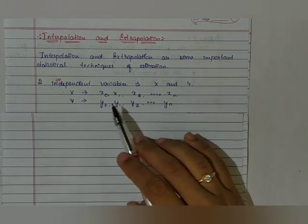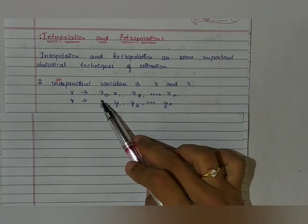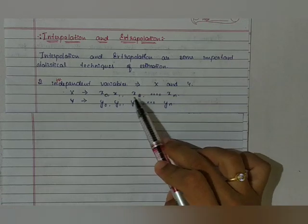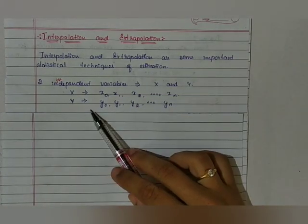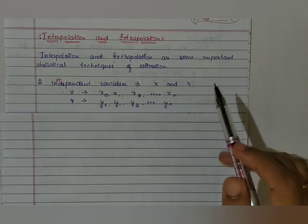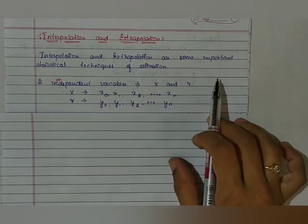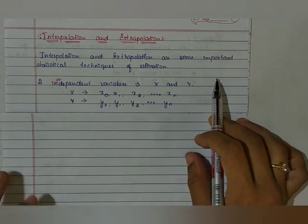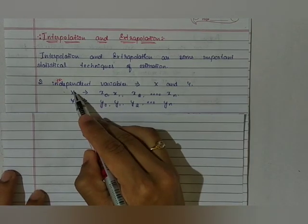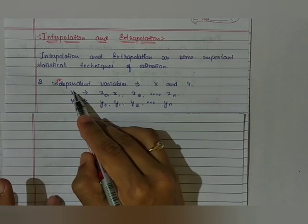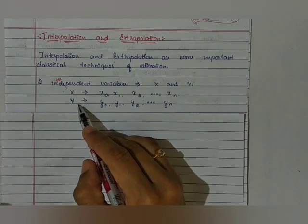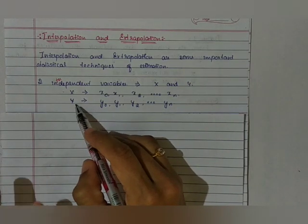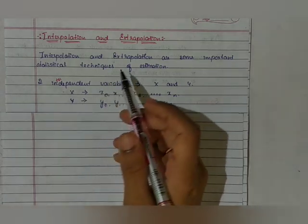The variables under x are x0, x1, x2 up to xn, and similarly for y it is y0, y1, y2 up to yn. Here x is the independent variable whereas y will be the dependent variable — y's value is dependent on x.